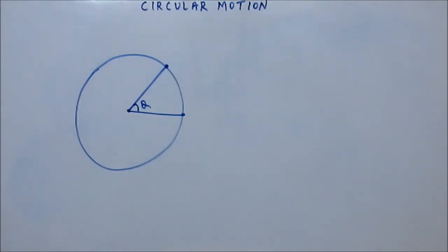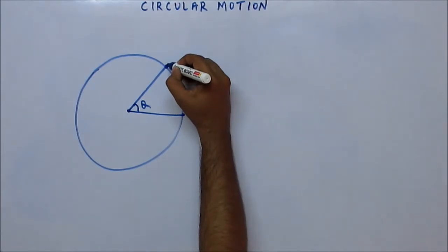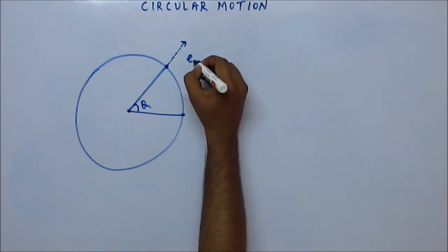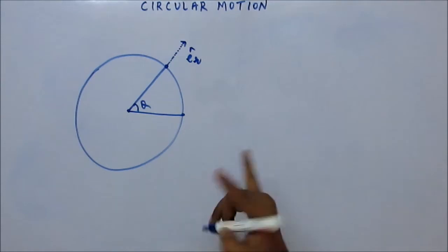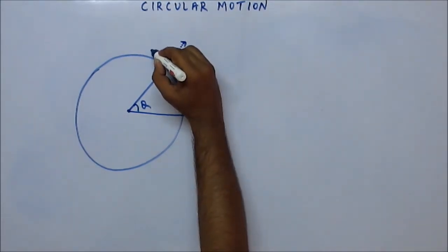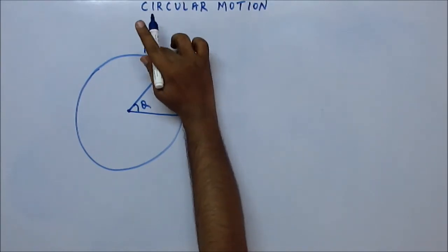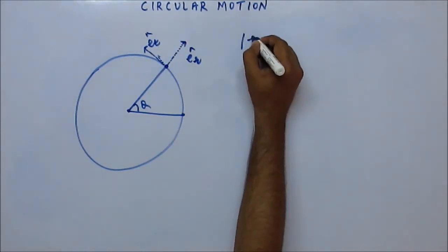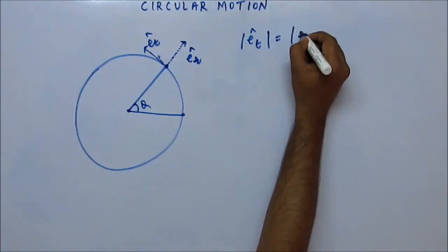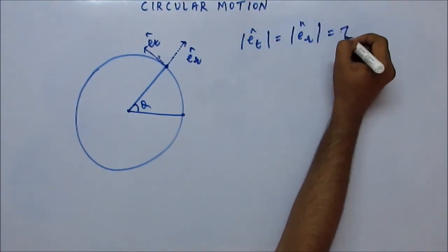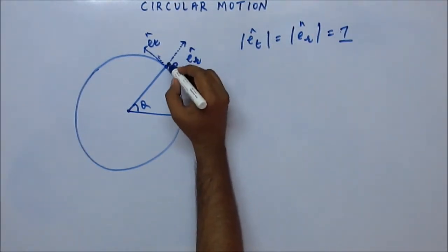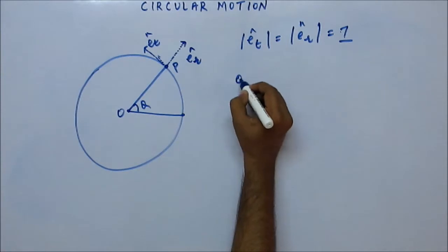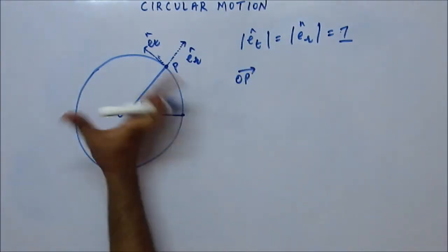Suppose the particle is at any general position θ, and I am defining two unit vectors. One is radially outward, called er-hat. You remember a unit vector — magnitude 1. And I am defining another unit vector perpendicular to it, meaning tangentially, called et-hat. The magnitude of both et-hat and er-hat is equal to 1. The particle is at position P and the center is O, so the position vector is OP.